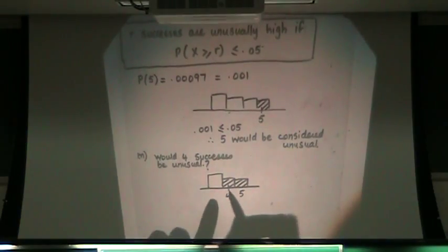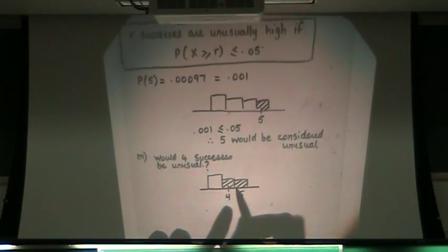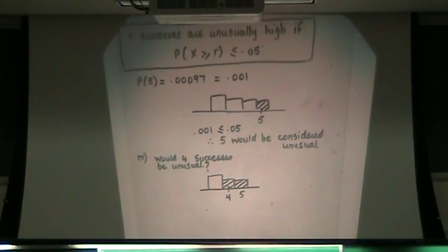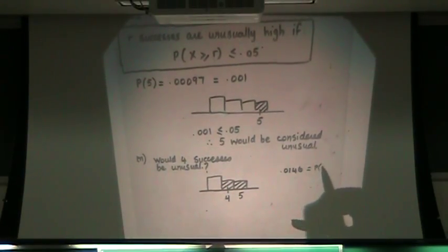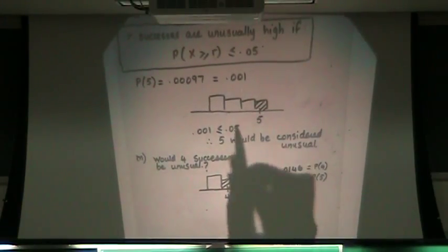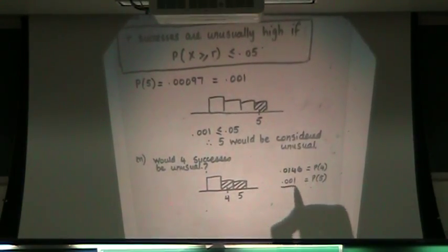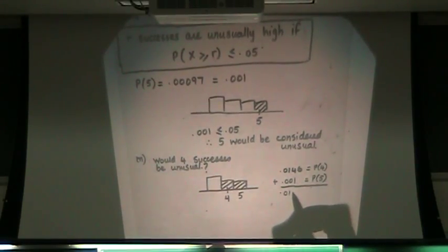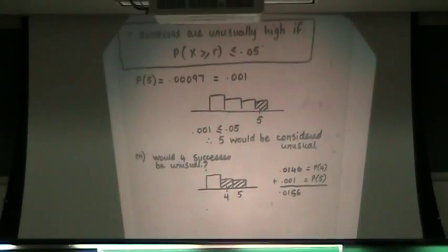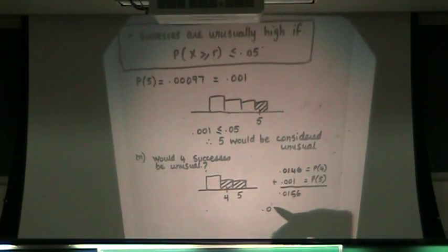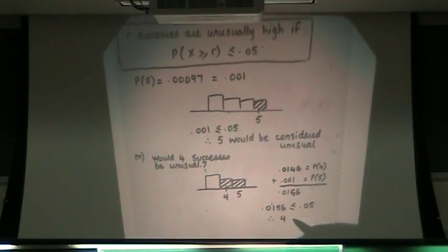What was the probability of four in this problem? Read me the probability of four. 0.0146 is the probability of four, and the probability of five we just said was 0.001. So when I add these together I get 0.0156, which of course is smaller than 0.05, therefore even four is unusual.